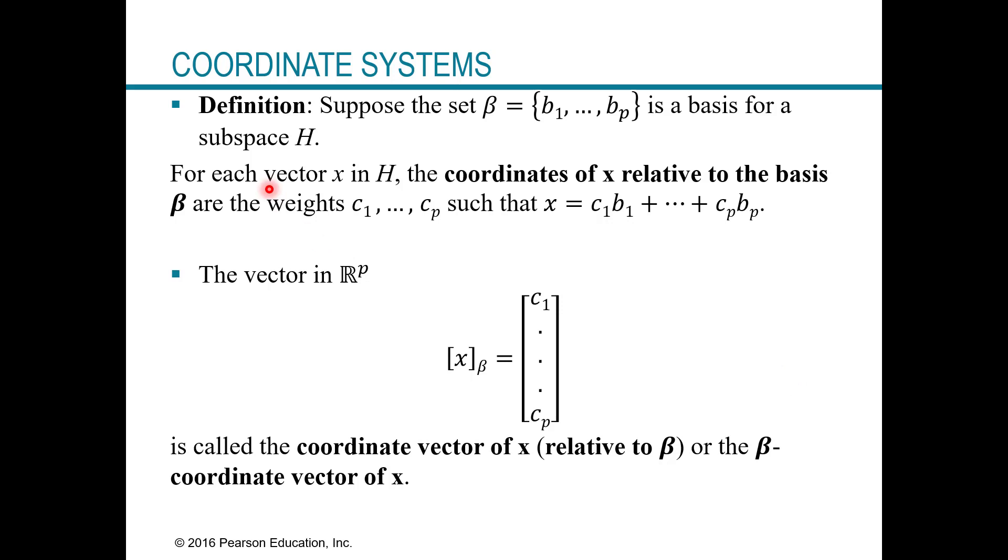Alright, so now the new part, we're going to first define coordinate systems, and then what we're going to lead into is eventually dimensions and then rank. So our definition here, we're going to define coordinates of x relative to a basis B. So suppose that the set B contains the vectors b1 and so on, and it's a basis for some subspace H.